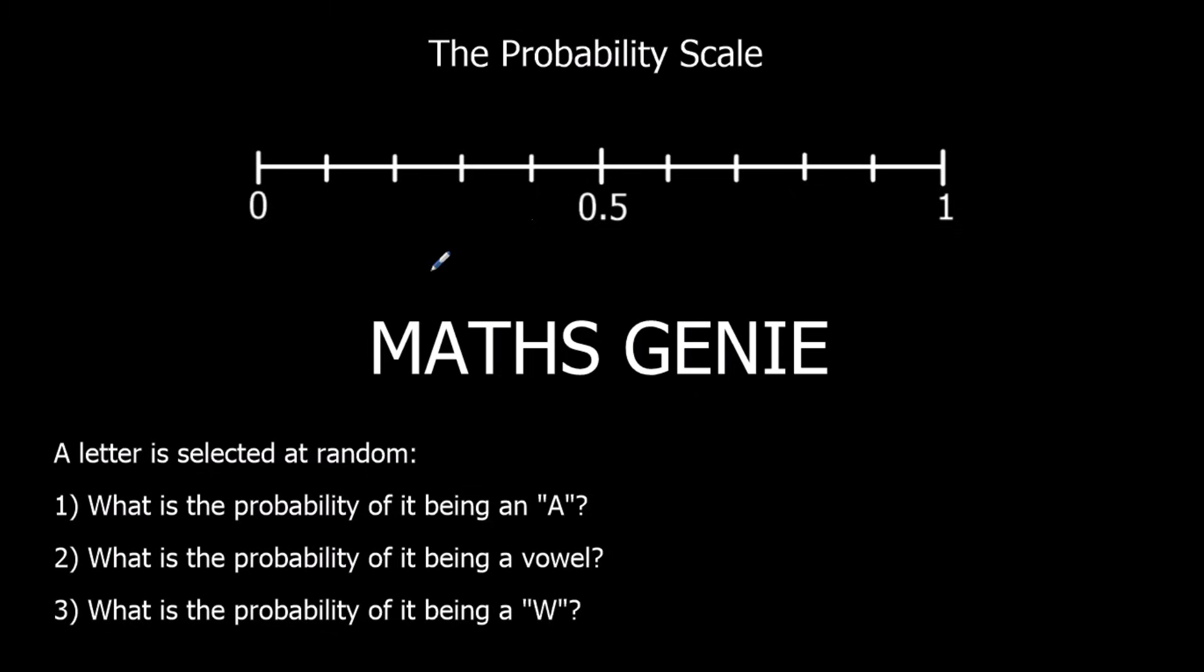Here we've got a question. It's got letters here of MATHS GENIE, and it says a letter is selected at random. What's the probability of getting an A? Well, if you have a look here, you can see there's only one A out of 10 letters, so it's 1 out of 10.